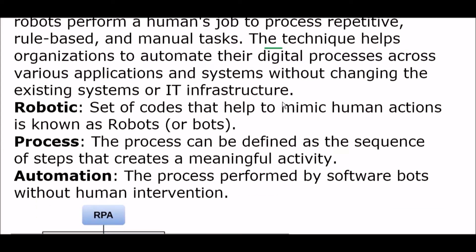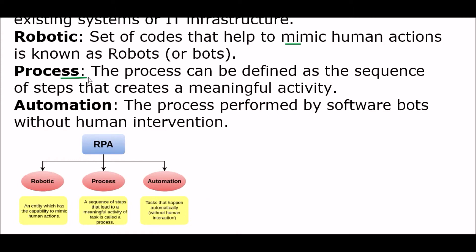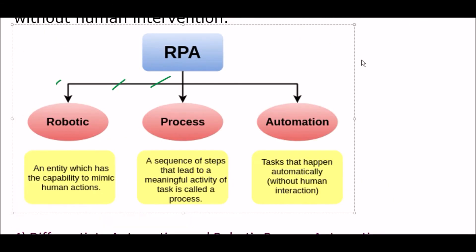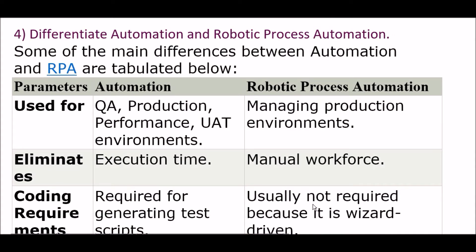Now, breaking down RPA: Robotic refers to a set of codes that help to mimic human actions, known as robots or bots. Process can be defined as the sequence of steps that creates a meaningful activity. Automation is the process performed by software bots without human intervention. So RPA is divided into three parts: Robotic — an entity with the capability to mimic human actions; Process — a sequence of steps leading to a meaningful activity; and Automation — a task that happens automatically without human interaction.